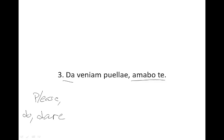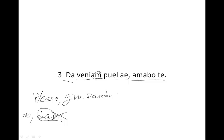The way to form the imperative is to just chop off the ending, so da — and that's a command: 'give.' Now let's think about the nouns. We have the command 'give,' so 'please give.' Give what to whom? The what will be in the accusative — that's pretty clearly veniam; the 'm' is a dead giveaway. That is accusative. The to whom will be in the dative — that, of course, is puellae. So: 'please give pardon or favor to the girl.'